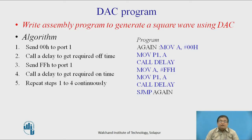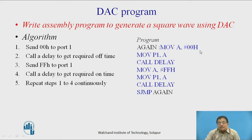The assembly program is written as follows: MOV A, #00H — load accumulator with 0, transfer to Port 1, so V_out will be 0. Then CALL delay to get the required off time. MOV A, #FFH and send to Port 1, meaning V_out will be at logic high. Then call the delay to get the required on time and repeat this continuously. You should think about how to write the delay subroutine.